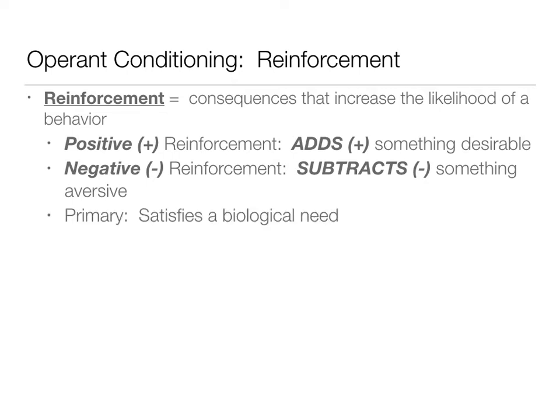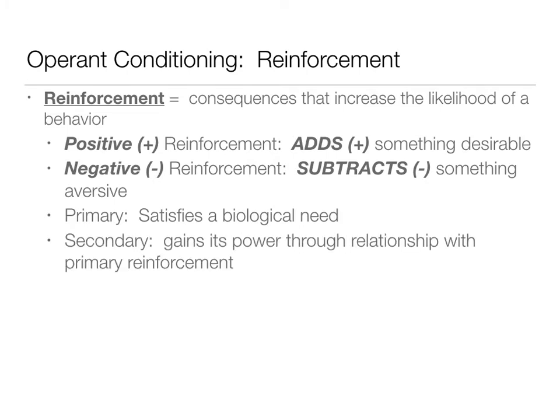There are also different kinds of reinforcement. Primary reinforcement satisfies a biological need — food and water would be primary reinforcers. Secondary reinforcers gain their power through a relationship with a primary reinforcer. Money is a great example of a secondary reinforcer for humans because you can buy food, drinks, shelter, and things that satisfy biological needs with money. That's why money would be a secondary reinforcer — it can pay for something in relation to that primary need.